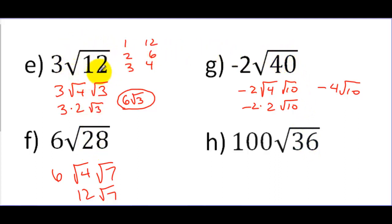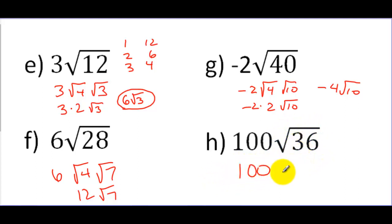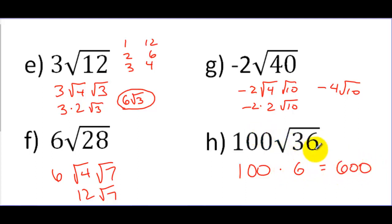If I say what's the square root of 12, you'd have to go to your calculator or estimate. But if I say what's the square root of 36, you know the answer — it's 6. So 100 times the square root of 36 is equal to 600. You could break this down, but you don't have to. You know what it is — just simplify it like you know.